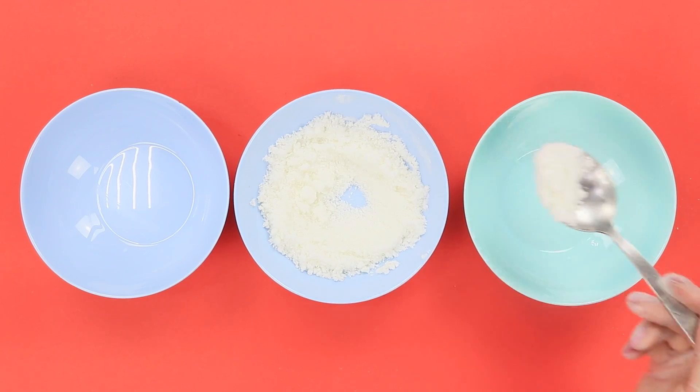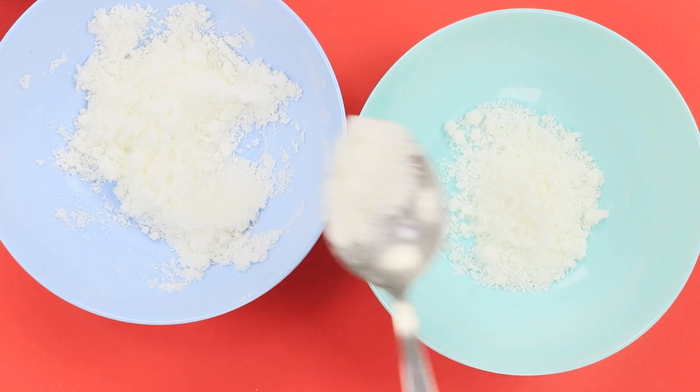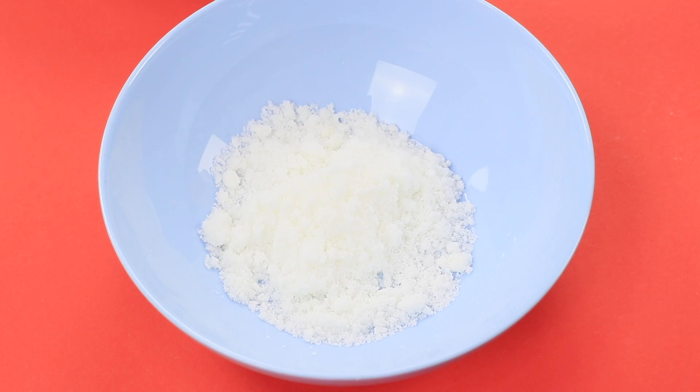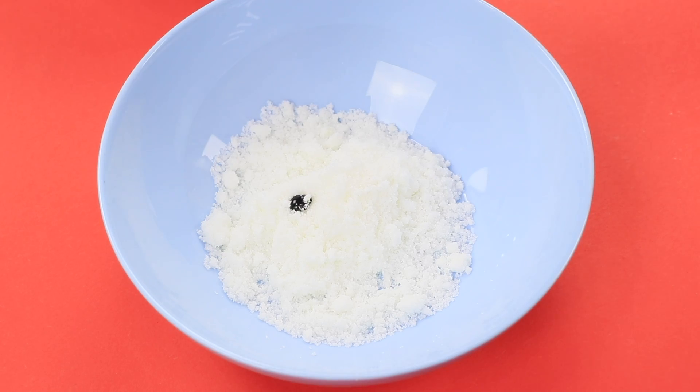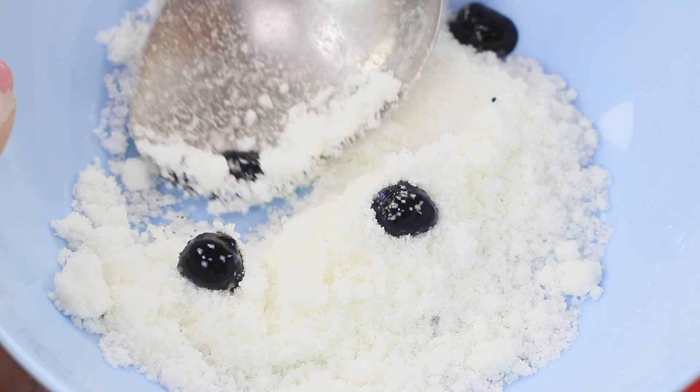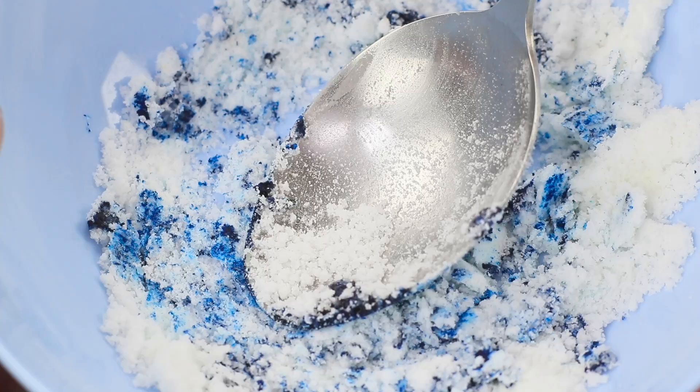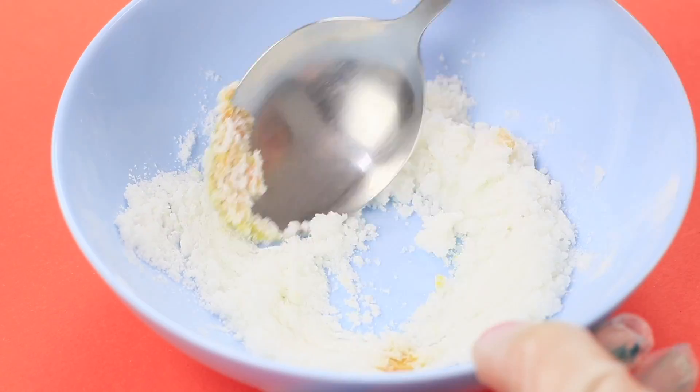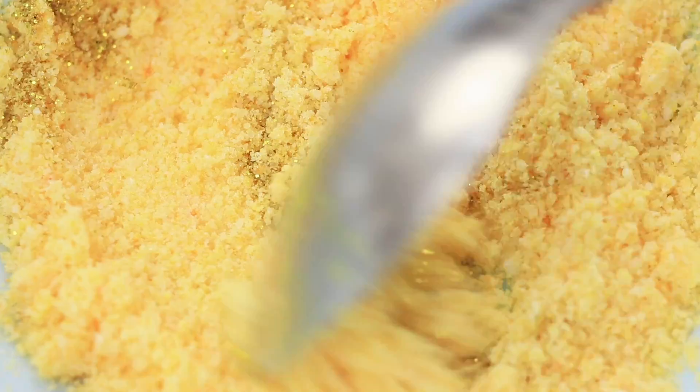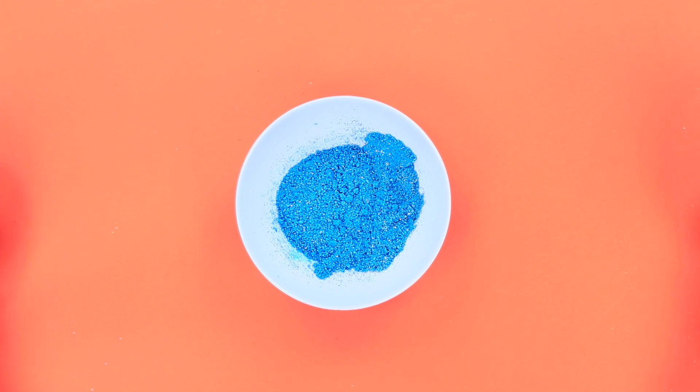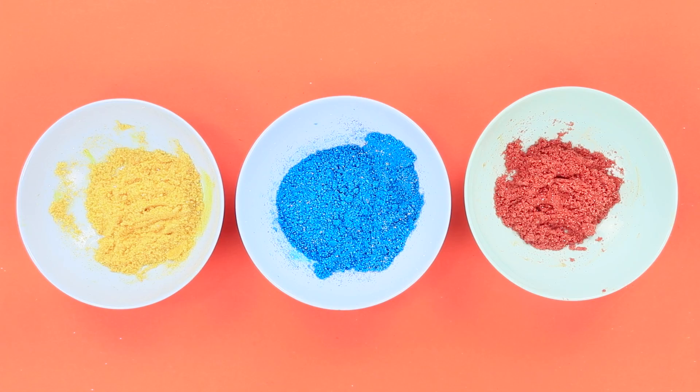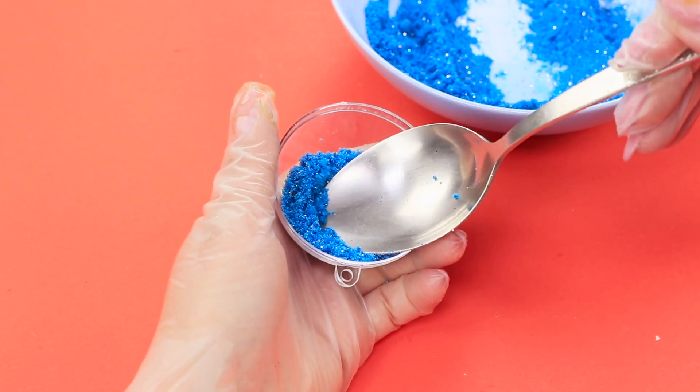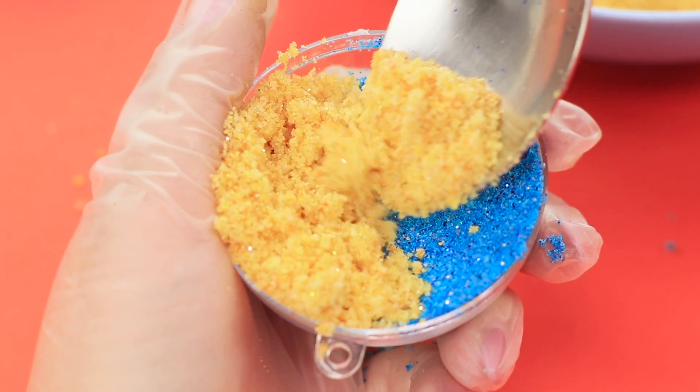Divide the mix into three parts. Add some drops of blue dye in the first bowl. Mix it! Add yellow dye in the second bowl. Mix and add sparkles. Put the red dye in the third bowl. Put the powders in a round plastic mold. The order of the colors is up to you!